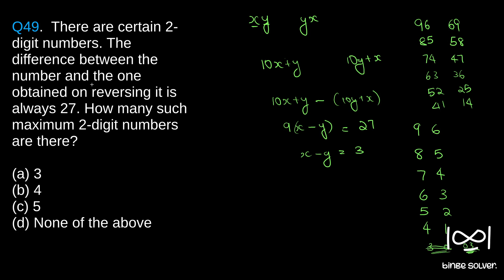Counting the pairs — 1, 2, 3, 4, 5, 6 — we have six pairs. If we count all numbers satisfying the condition (difference between the number and its reverse is 27), we have 12 such numbers. Any of these 12 numbers satisfies this condition.